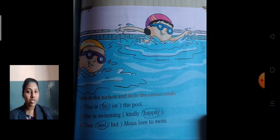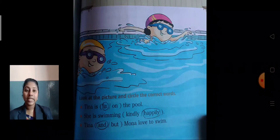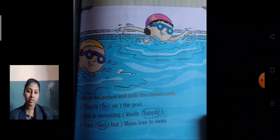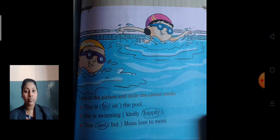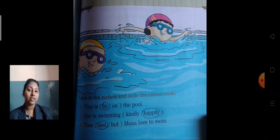I am going to read the sentences — listen carefully. First one: Tina is back, at, in, or on the pool. Where is Tina? Tina is in the pool. So you want to circle the word 'in'.